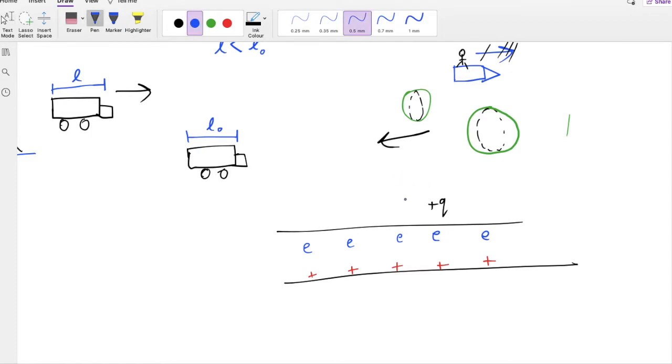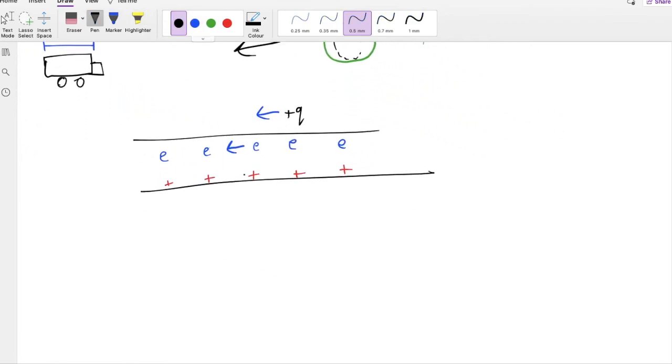But if I start to move the charge and produce a current in this wire, now relativity applies here. What happens is, from the charge's frame of reference, the electrons are almost moving along with the charge. So it feels as though the electrons are actually stationary, along with the charge.